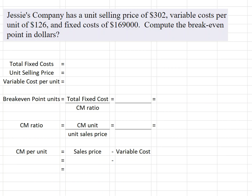Here's a problem where we're asked to calculate the break-even point in dollars. Jesse Company has a unit selling price of $302, variable cost per unit of $126, and fixed costs of $169,000. Compute the break-even point in dollars.